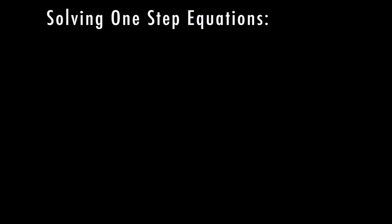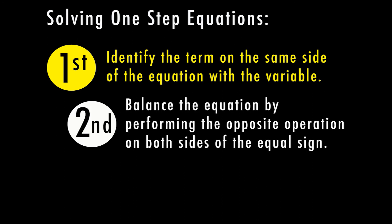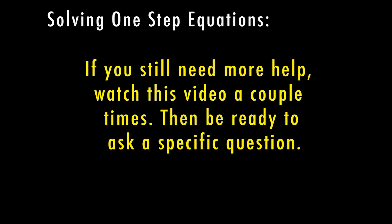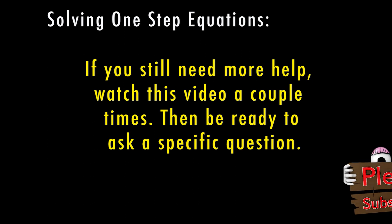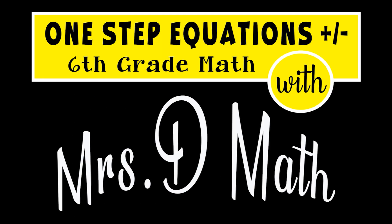Let's recap the steps for one-step equations. First, identify the term on the same side of the equation with the variable. Next, balance the equation by performing the opposite operation on both sides of the equal sign. Then, isolate the variable by solving both sides of the equation to find the value of that variable. I hope this video helped you understand solving one-step equations with addition and subtraction. You can watch it a couple of times and go through the examples, then ask specific questions. This is Mrs. D signing off — thanks for joining me for the first part of One Step Equations. Have a great day!